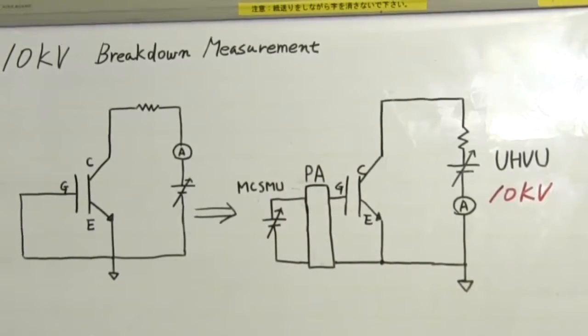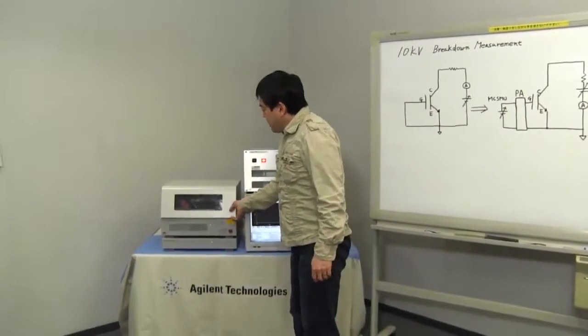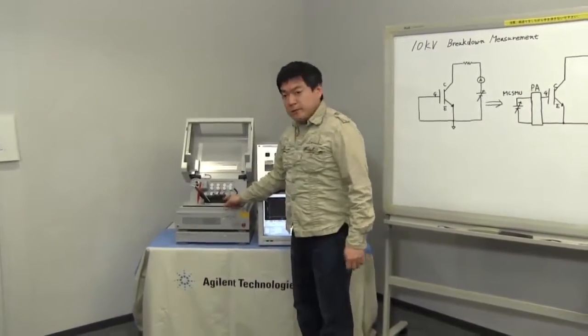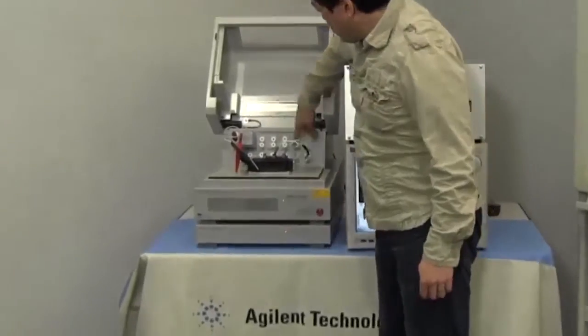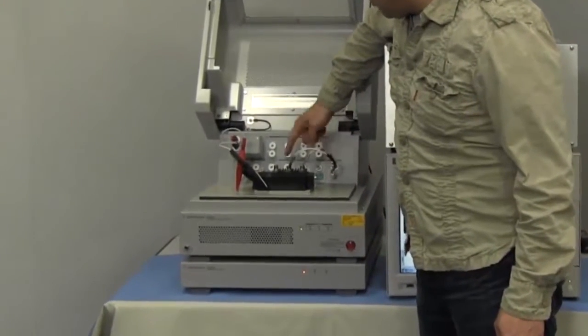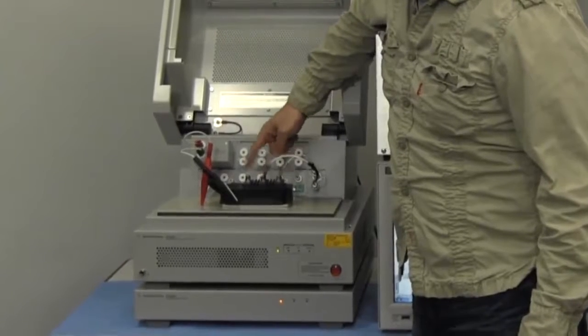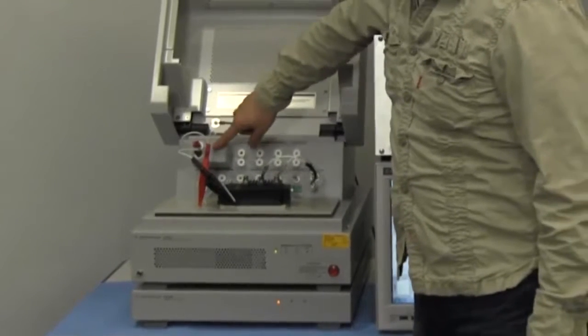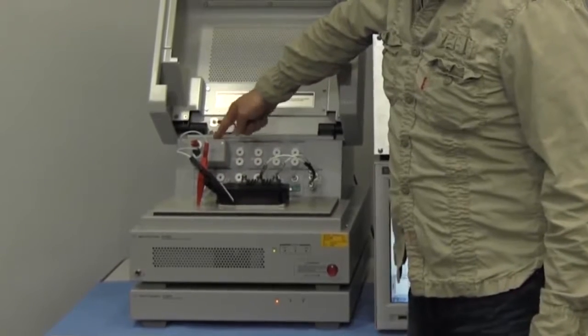Okay, let's start measurement. Today, I'd like to measure this IGBT, this big size IGBT. And ultra-high voltage unit is connected to the collector, and low-volt is connected to the emitter. And the gate signal is connected through this protection adapter.